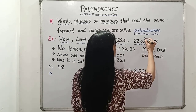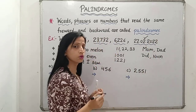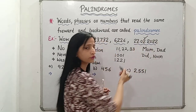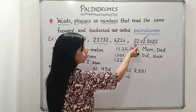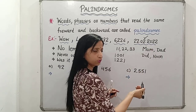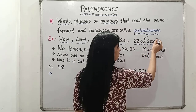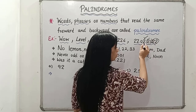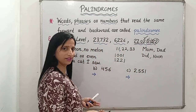Moving on to palindromic dates. There are dates also which, when we read from the reverse order from the back side, will be the same. For example, 22/02/2022 — let's read it from the back side: 22, 02, 2022. It's the same.